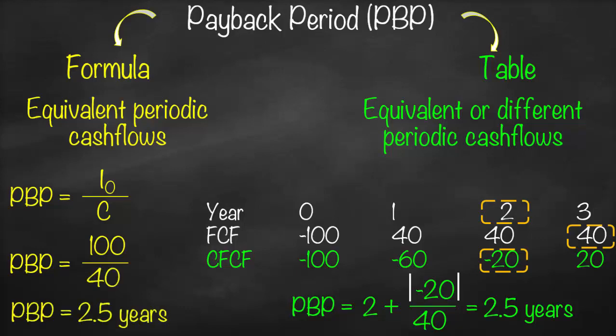So 100 divided by 40 gives us 2.5 years — exactly the same number we got from the table. So remember, the formula can only be used when cash flows are equivalent.